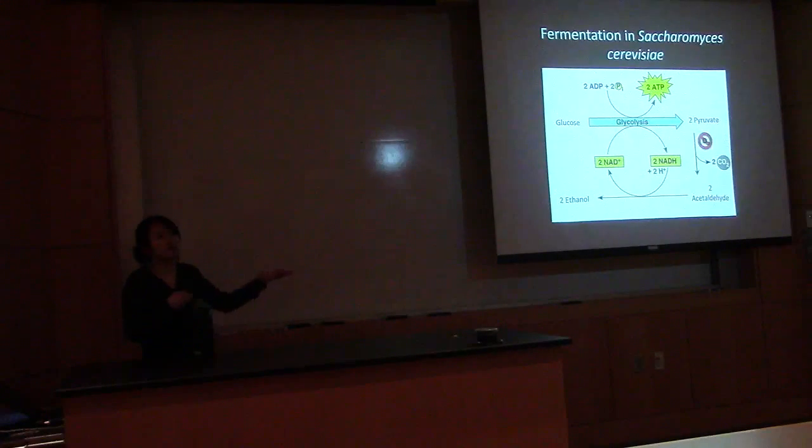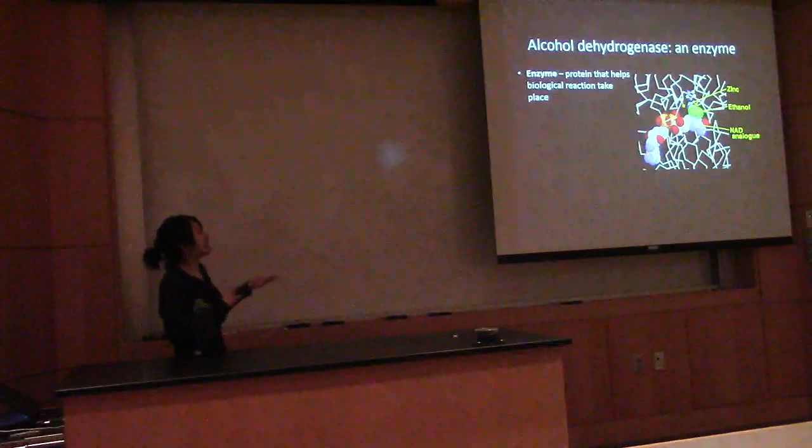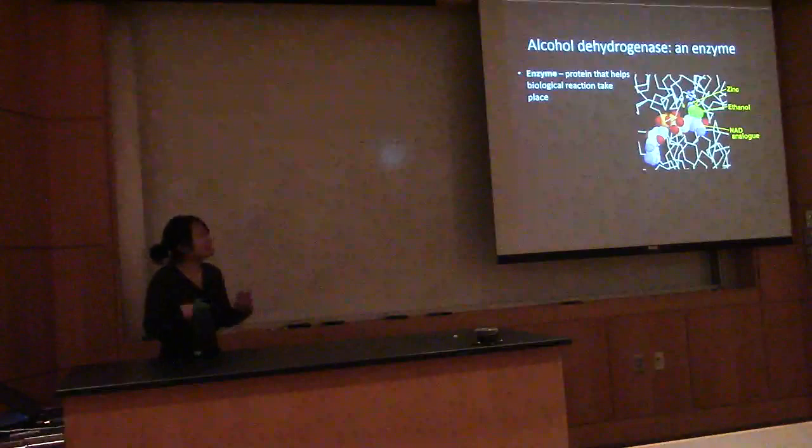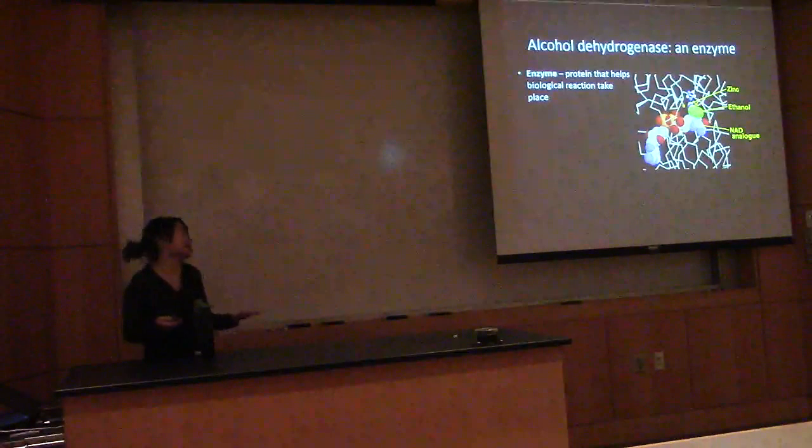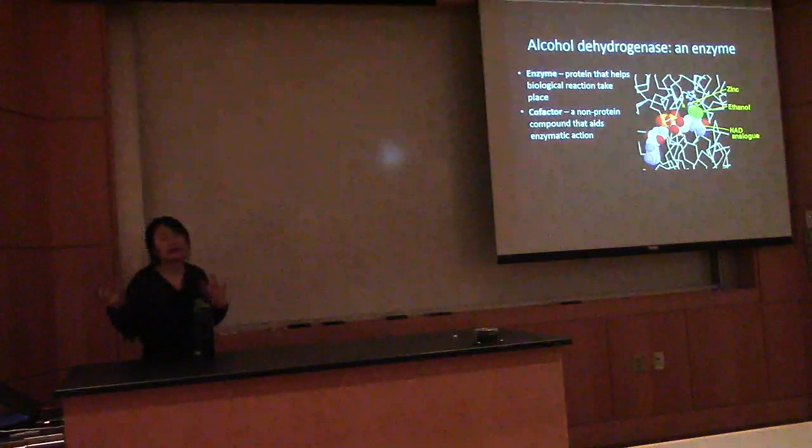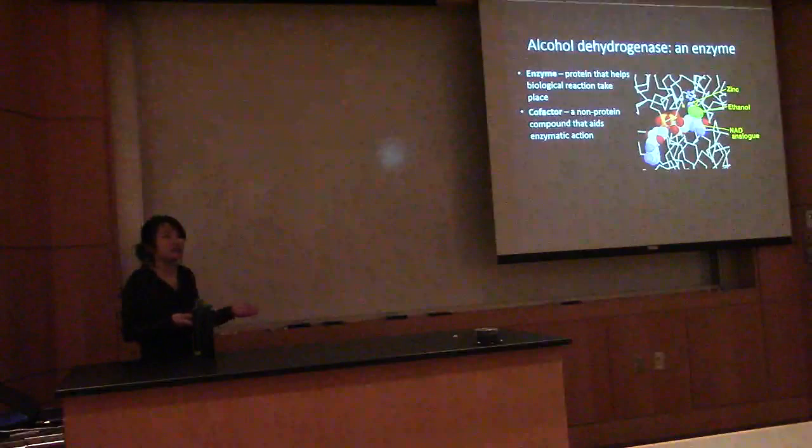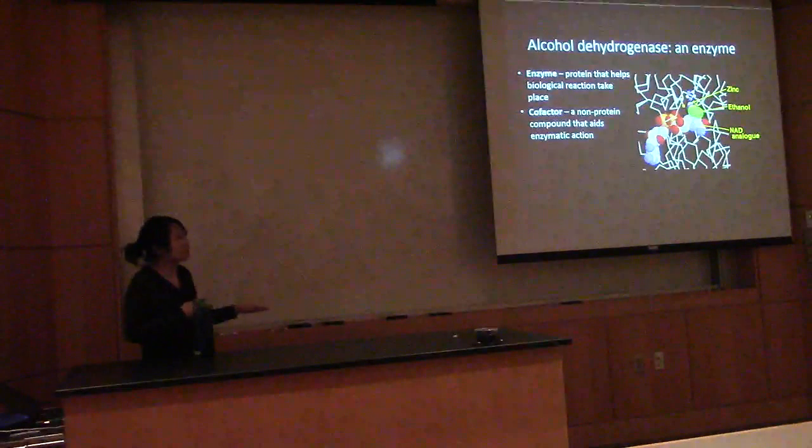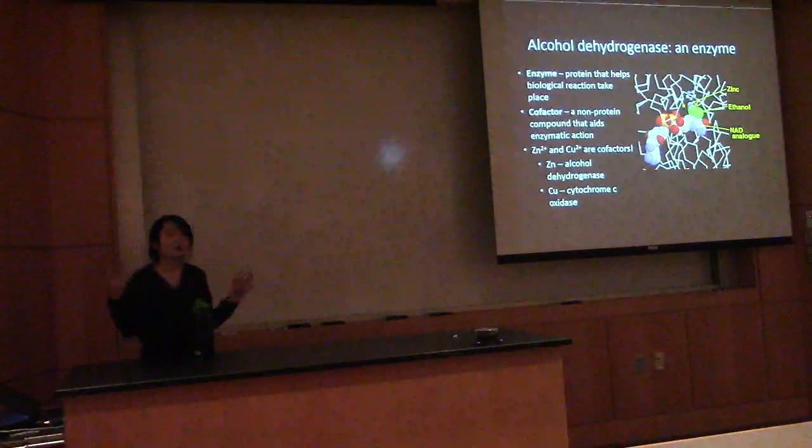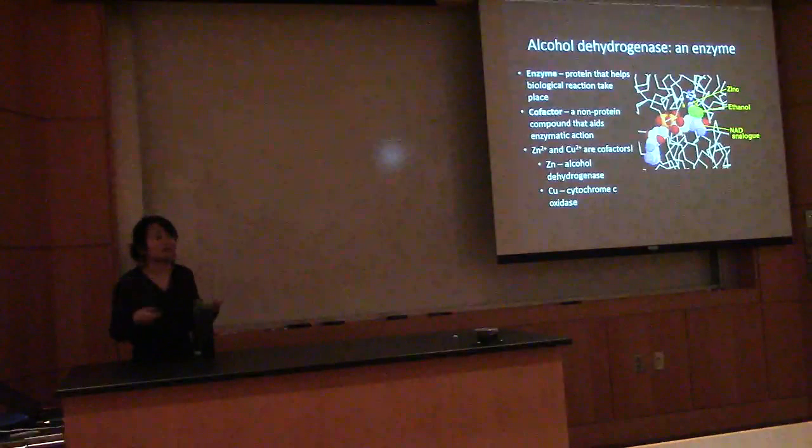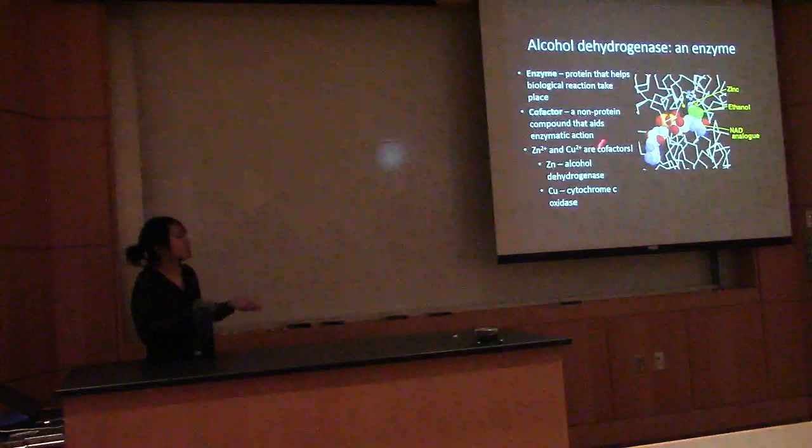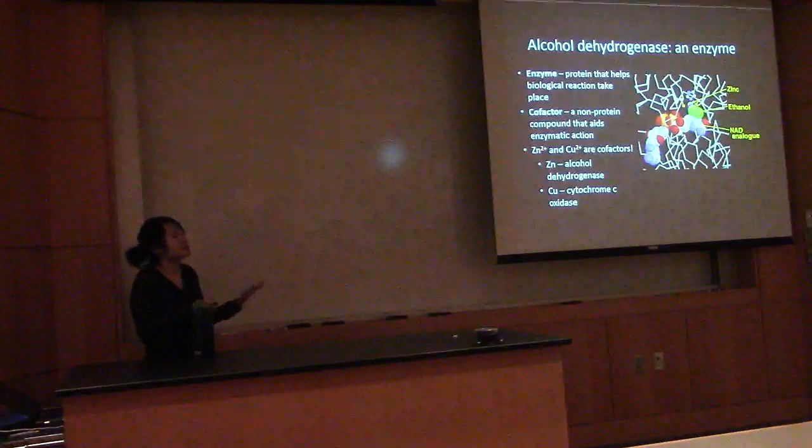Another thing that helps in this final step of converting acetaldehyde to alcohol is something called alcohol dehydrogenase. It's an enzyme. What is an enzyme? It is a protein that helps a biological reaction take place. Sometimes enzymes work with cofactors. Cofactors are non-proteins that aid the enzyme in its action. NADH is a cofactor in that last step of converting acetaldehyde to ethanol. And also, zinc and copper are also cofactors. Zinc is a cofactor for our alcohol dehydrogenase, helping convert the acetaldehyde to ethanol.